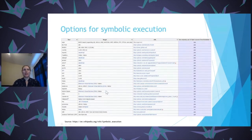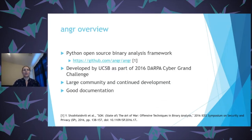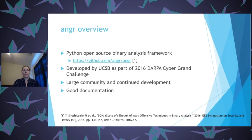There's a chart from Wikipedia showing all the symbolic execution frameworks available — there are a lot of them and many are open source. We're going to talk specifically about one: angr. Angr is a Python open-source binary analysis framework on GitHub. It was developed by UCSB as part of their 2016 DARPA Grand Challenge entry. The goal of the DARPA Grand Challenge was to create automated defensive systems to find bugs and patch them. It has a large community with continued development and great documentation.